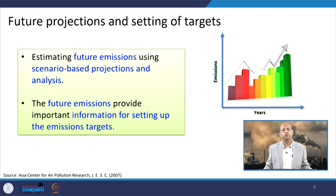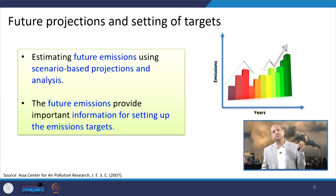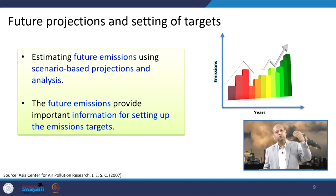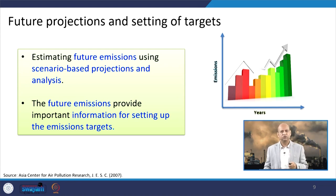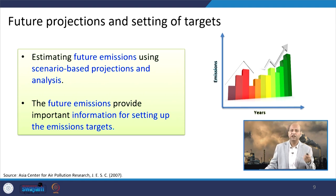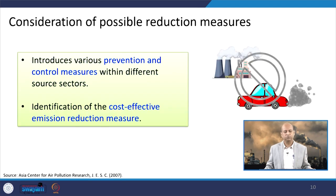Future emissions can provide important information for setting emission targets. For example, because of electric vehicles, NOx emissions may reduce — then you can concentrate on other sectors for other pollutants rather than NOx. It can also influence whether ozone production is being affected, and those modelling techniques can give additional information by incorporating those kinds of gases or precursors.